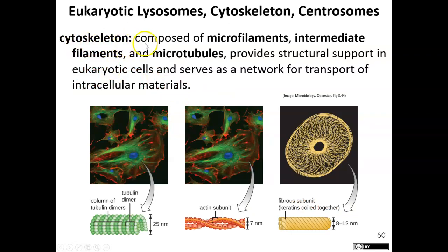The cytoskeleton is composed of three different proteins: microfilaments, intermediate filaments, and microtubules. The cytoskeleton allows for movement of materials within the cell and helps maintain cell structure. Some eukaryotic cells also have a cell wall that helps maintain structure, but not all do. All eukaryotic cells have a cytoskeleton that helps maintain cell shape and facilitates movement of materials.